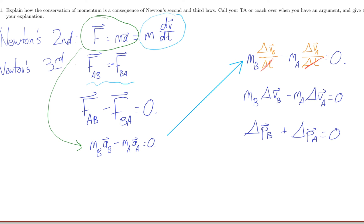And if the change in something, the change in the total of something is zero, that means its total is constant.